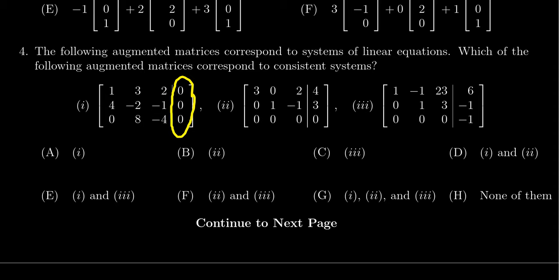That is, every homogeneous system has a solution because I could just take the zero vector (zero, zero, zero) as a solution. That would solve that one. So choice number one is a consistent system because it is homogeneous.